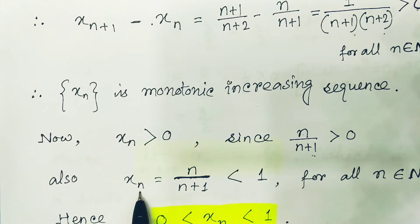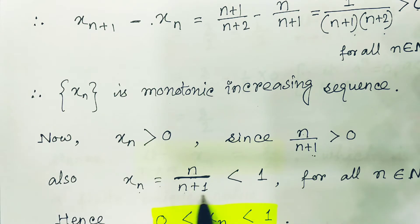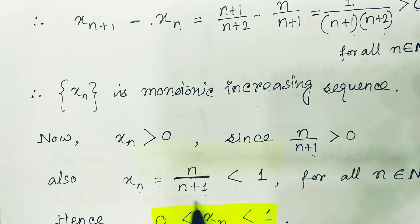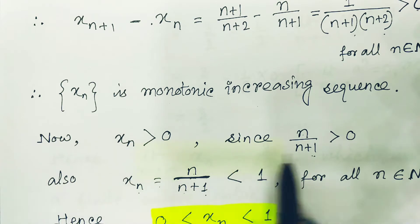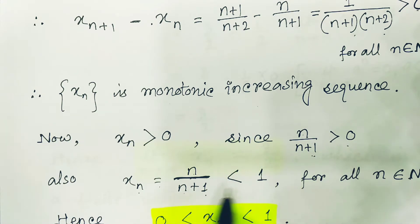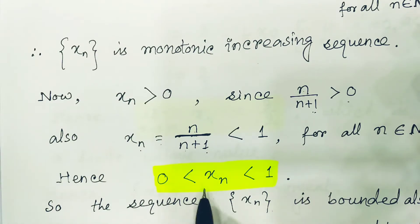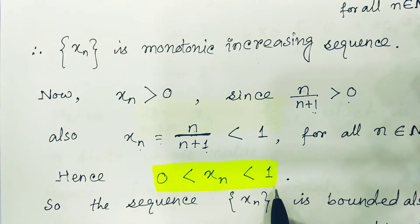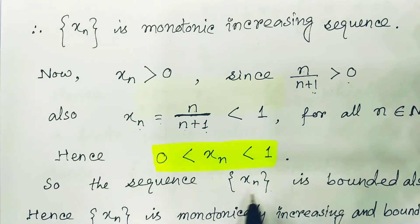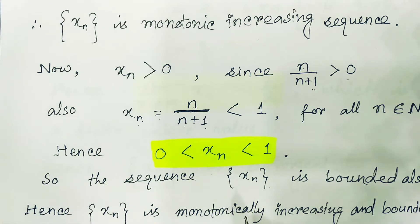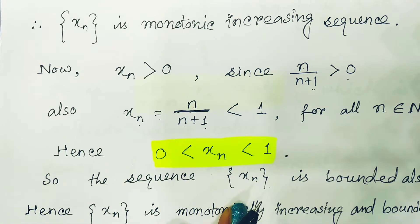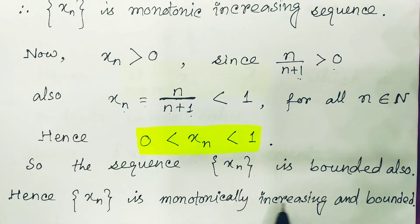Also, n/(n+1) is less than 1 because n is always less than n+1. So xn lies between 0 and 1, meaning the sequence is bounded. Since the sequence is both monotonically increasing and bounded, we can conclude that the given sequence is convergent.